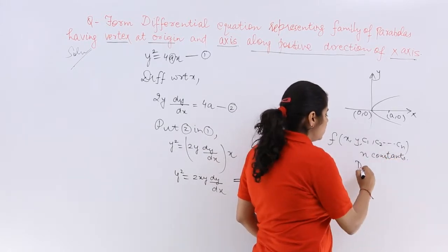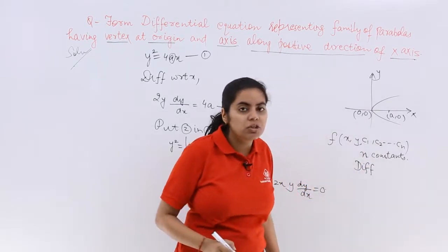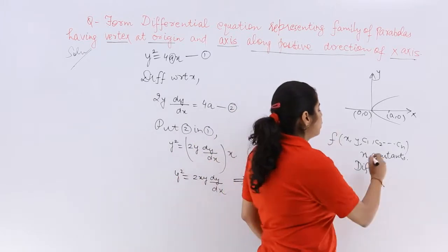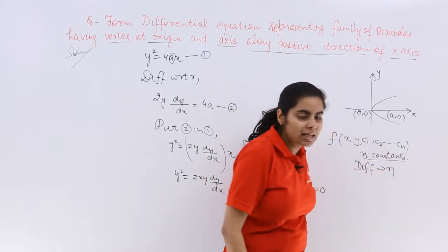how many times do we need to differentiate it? This is not x, this is n. How many times did we differentiate it? The number of constants will decide how many times we need to differentiate. So n times we differentiate.